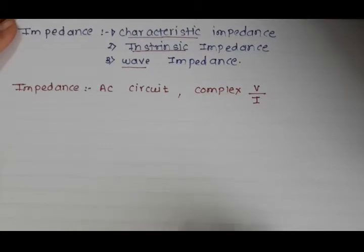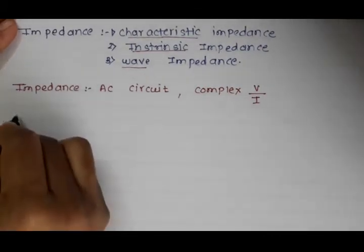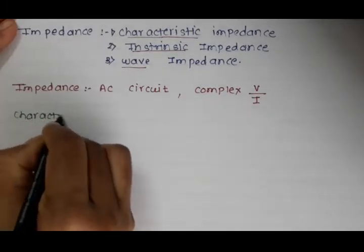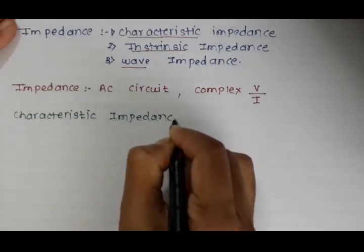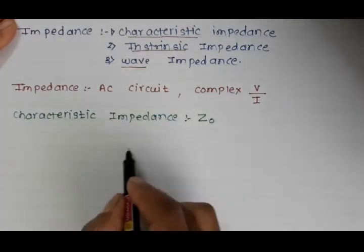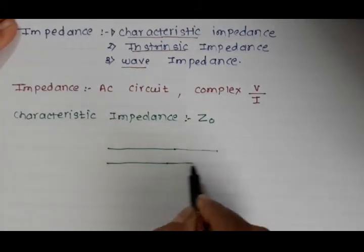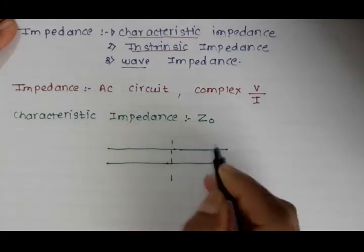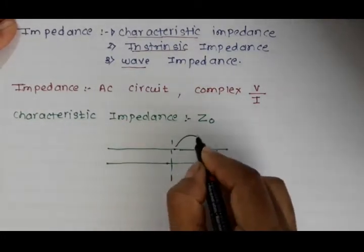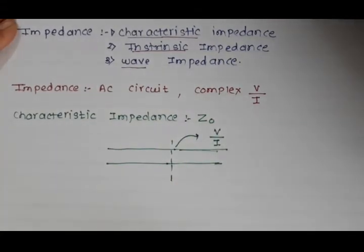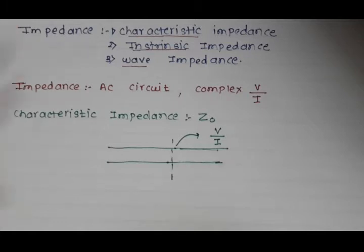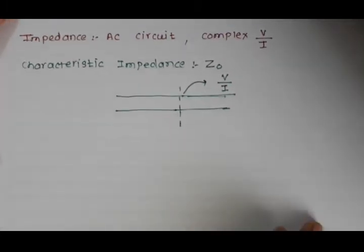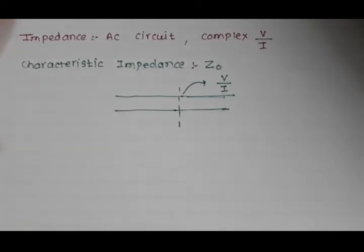The first impedance is the characteristic impedance. In the characteristic impedance, we are assuming that our transmission line is infinite. Characteristic impedance is denoted by Z0. If an infinite transmission line is there and we cut that transmission line anywhere in between, the ratio of V by I will be called the characteristic impedance Z0. It is always recommended that your characteristic impedance must match with the load impedance to deliver complete power.